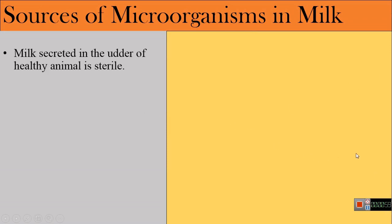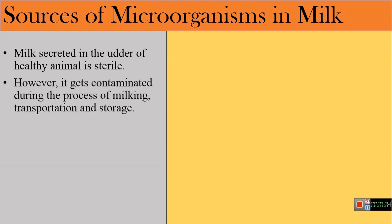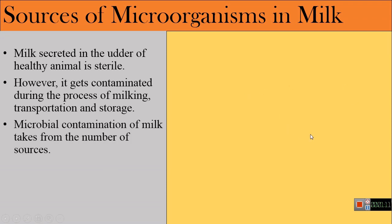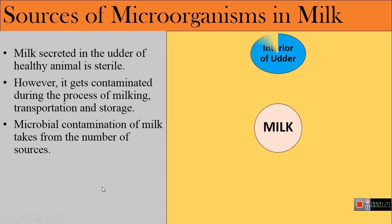The milk secreted in the udder of a healthy animal is always sterile. However, it gets contaminated during the process of milking, transportation, and storage. The contamination takes place from a number of sources. The most common sources of microorganisms in the milk are the interior of the udder,